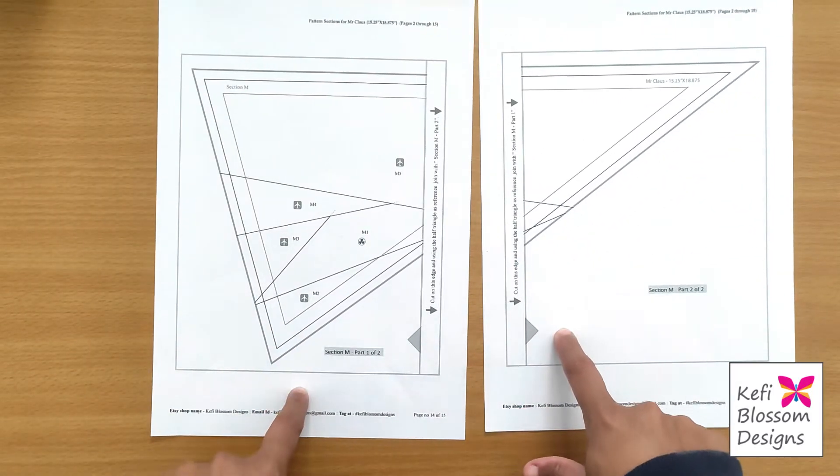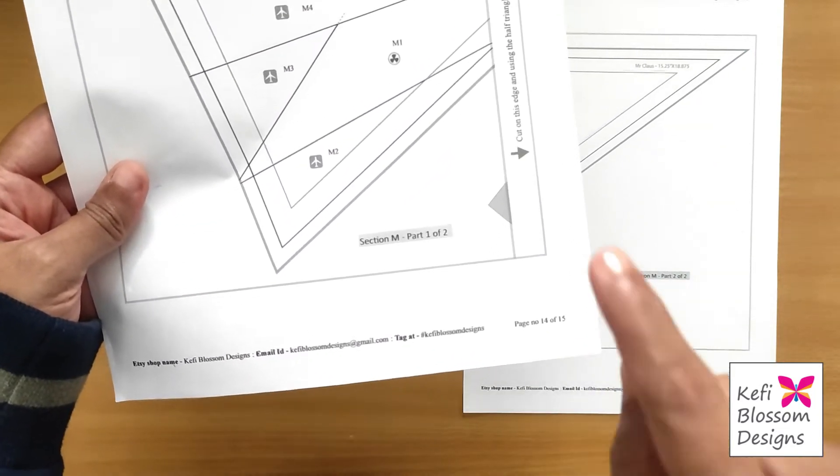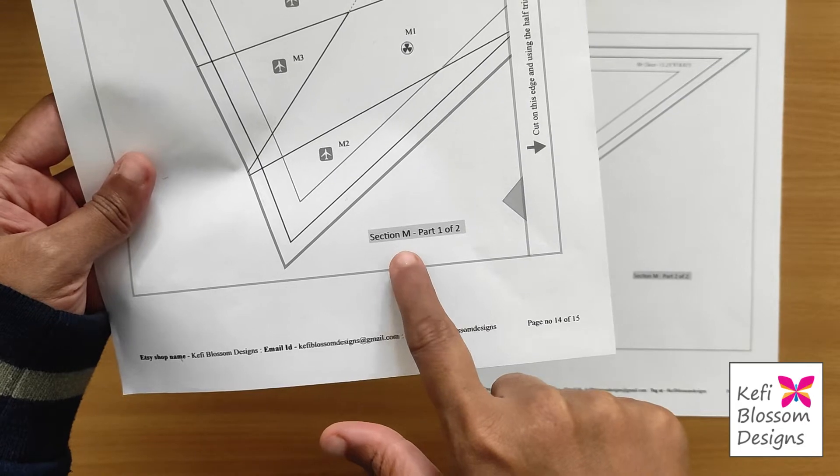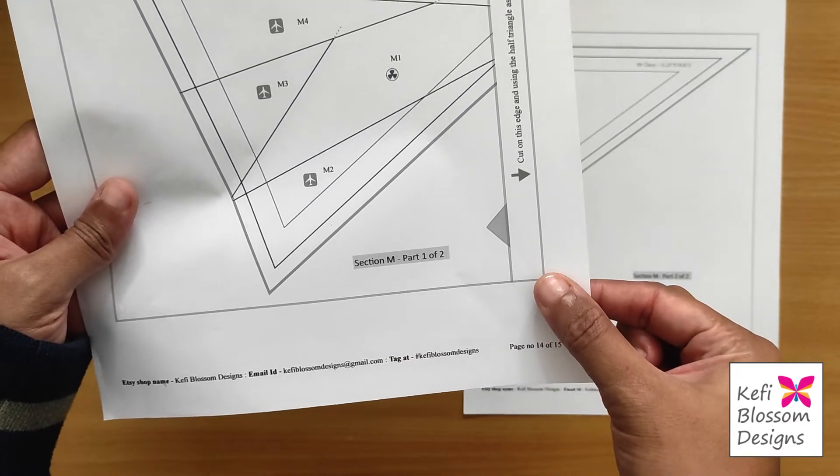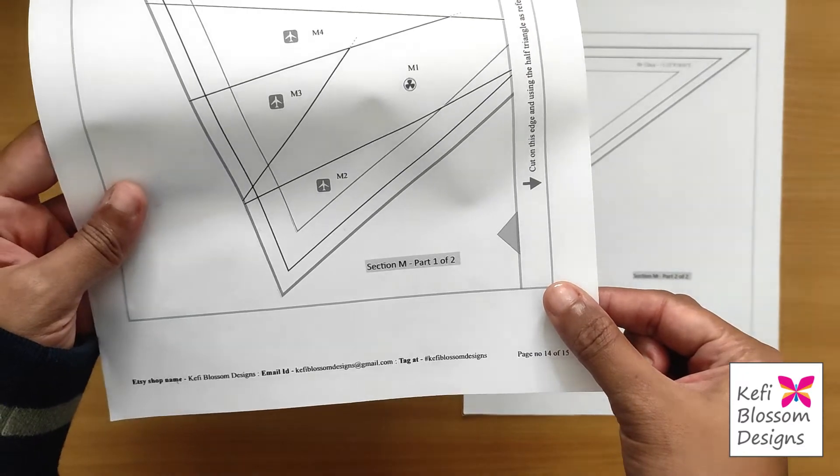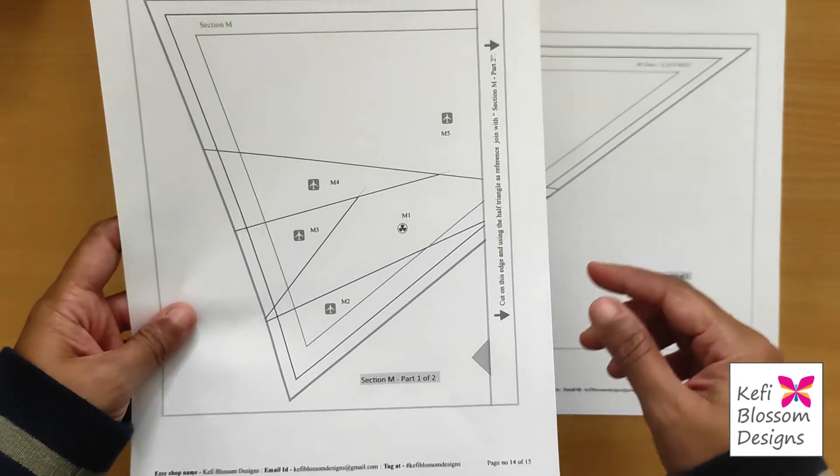That's why they are divided and spread across different sheets. This is one example. Now when you look at a divided section, the first thing you must look at is the label. Over here it says section M part 1 of 2, which means that this particular section is divided in two parts, and the next thing that you need to look at are the instructions.